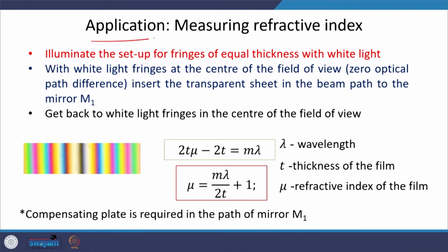The next application is measuring refractive index. In Young's double slit we covered one slit with a thin transparent film and measured the shift in the central maximum to calculate the refractive index. A similar approach is used here. We must use white light interference fringes as a reference, because the monochromatic fringes in the setup are indistinguishable from one another, and white light fringes allow us to detect and measure the shift.